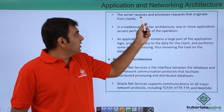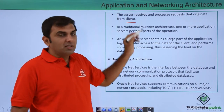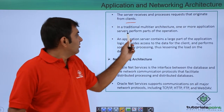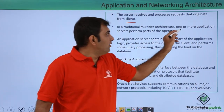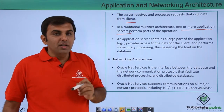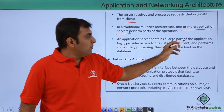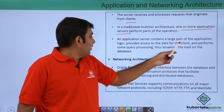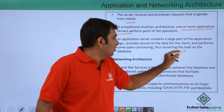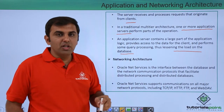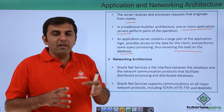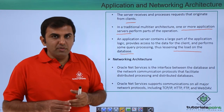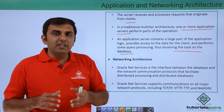The server receives and processes the request that originates from the client. In the traditional multi-tiered architecture, one or more application servers perform part of an operation. You have one or more application servers which are sending requests to your database. The application server contains the large part of application logic, provides access to the data for the client, and performs some query processing, thus lessening the load on your database. If you have multiple applications, multiple queries are executing on your database, creating load on your database server — a one-to-many or many-to-one relationship.